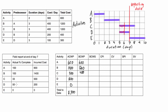For activity D, we completed 50% of the two-day activity, meaning one full day of work was accomplished. We budgeted $200 per day, so the BCWP for activity D is $200. Activity E's BCWP is zero since it hasn't started. Adding these up, the total BCWP to date is $2,400.